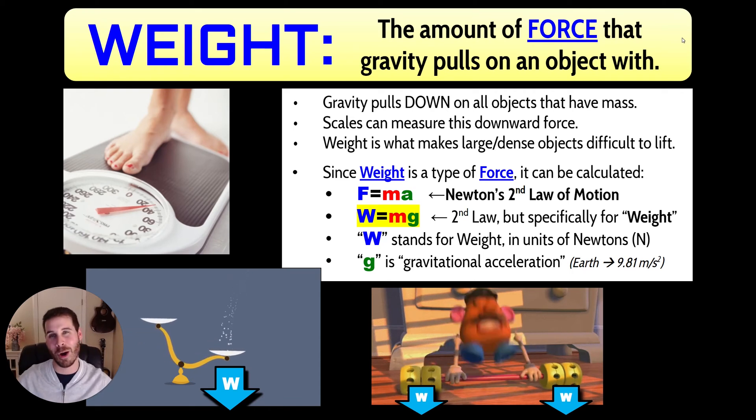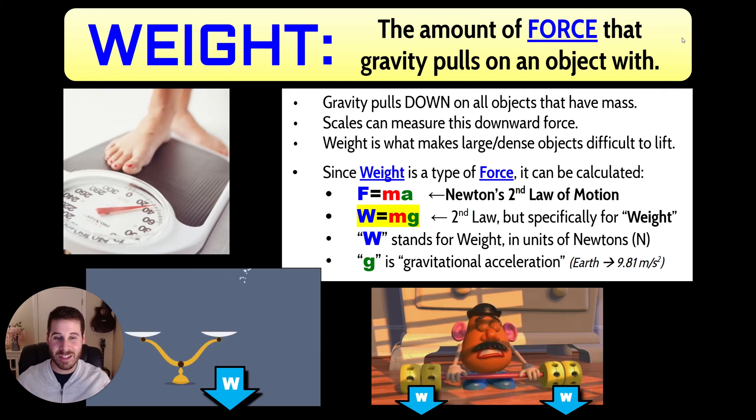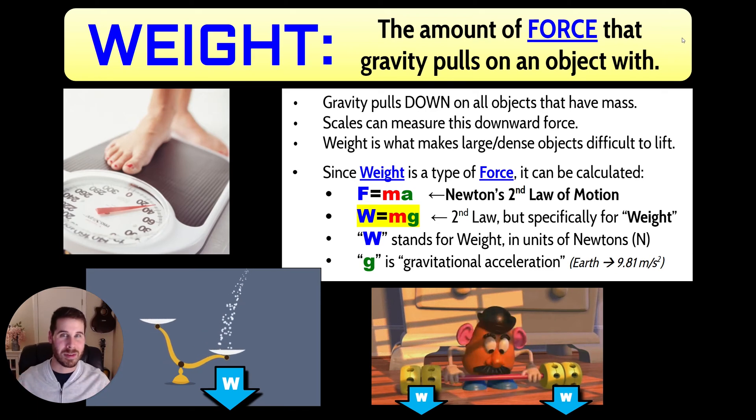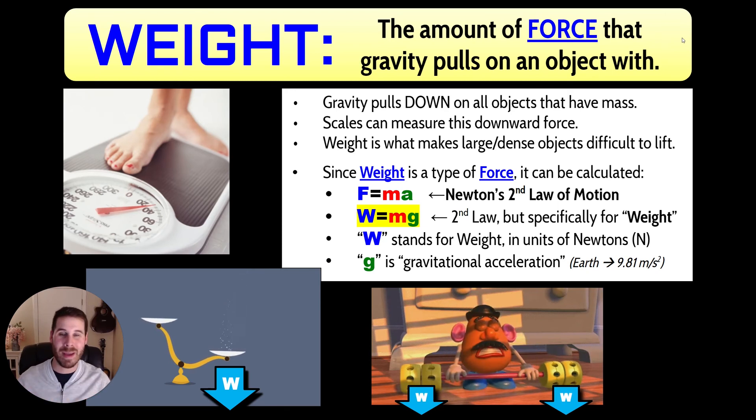On the right, you can see a clip from the movie Toy Story. Mr. Potato Head is trying to lift up a barbell. And these things on either side, the weights we would sometimes call them, the thing that they actually contain is mass. And because they have mass, gravity therefore pulls on them. And that pull of gravity, which we call weight, is the thing that's actually making it hard for Mr. Potato Head to lift it up.